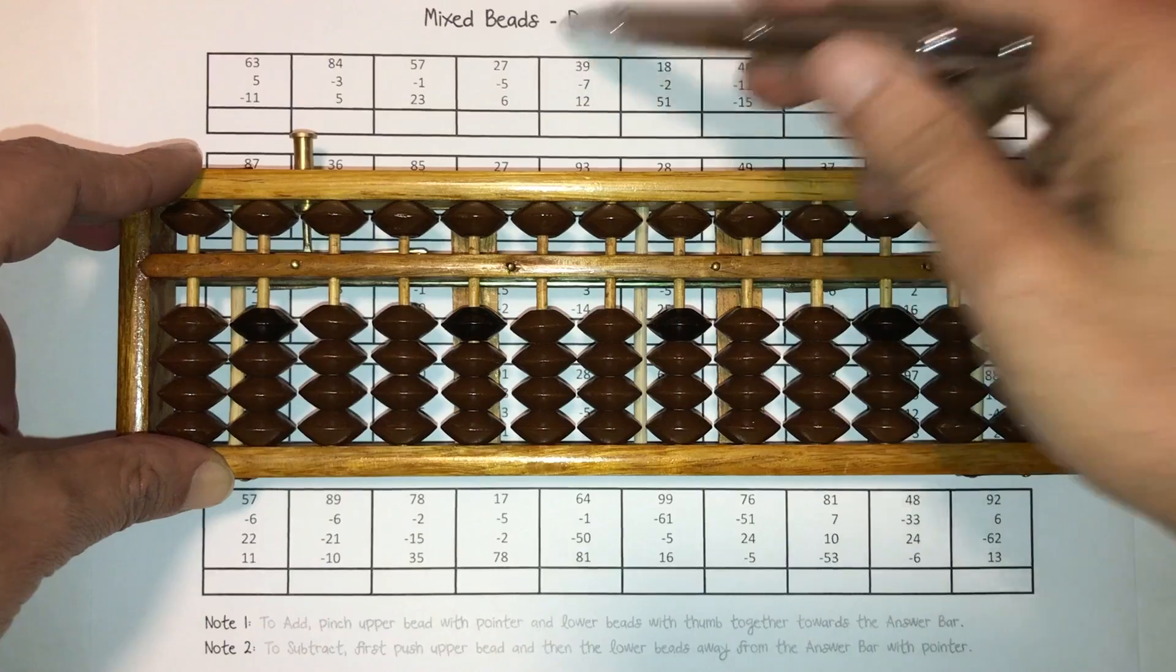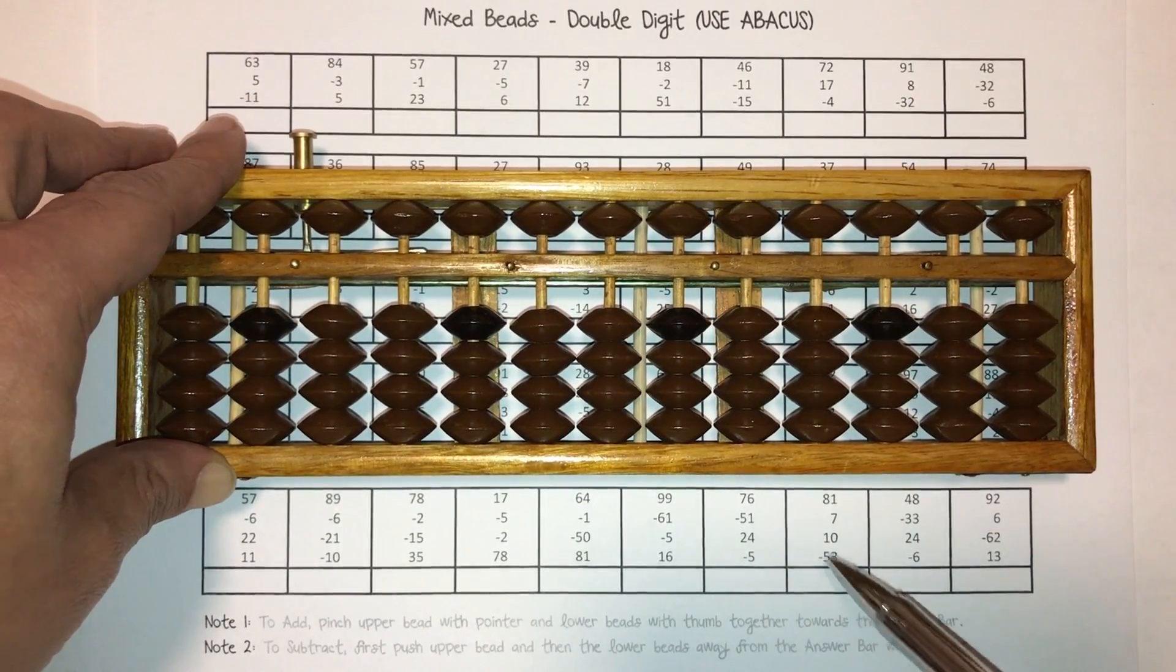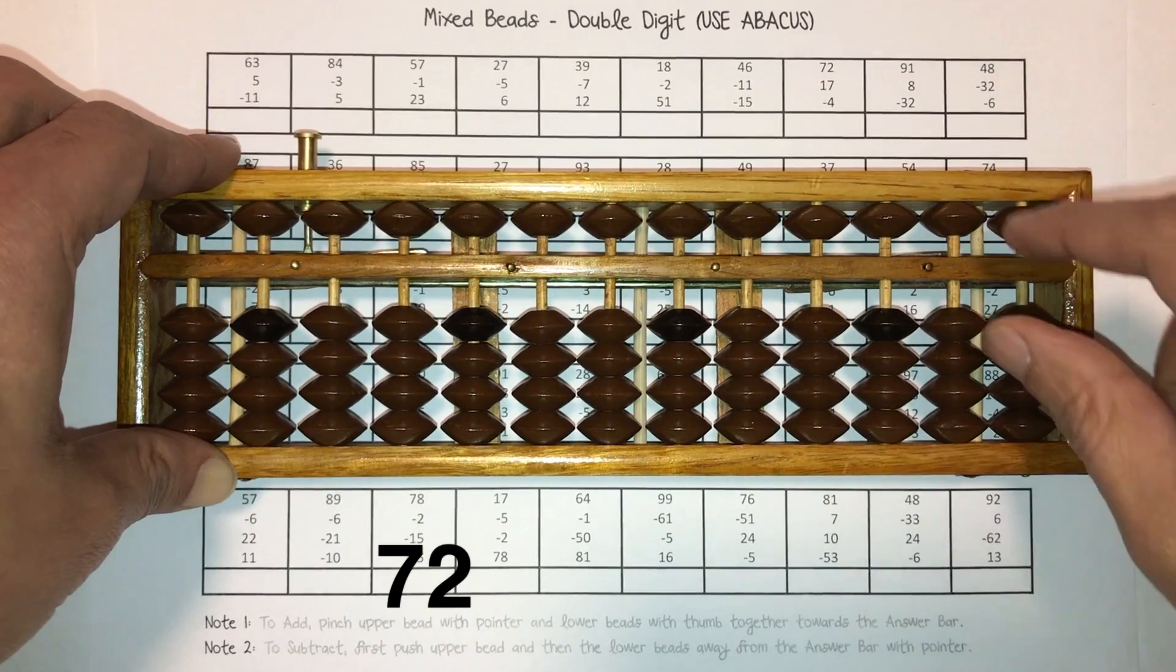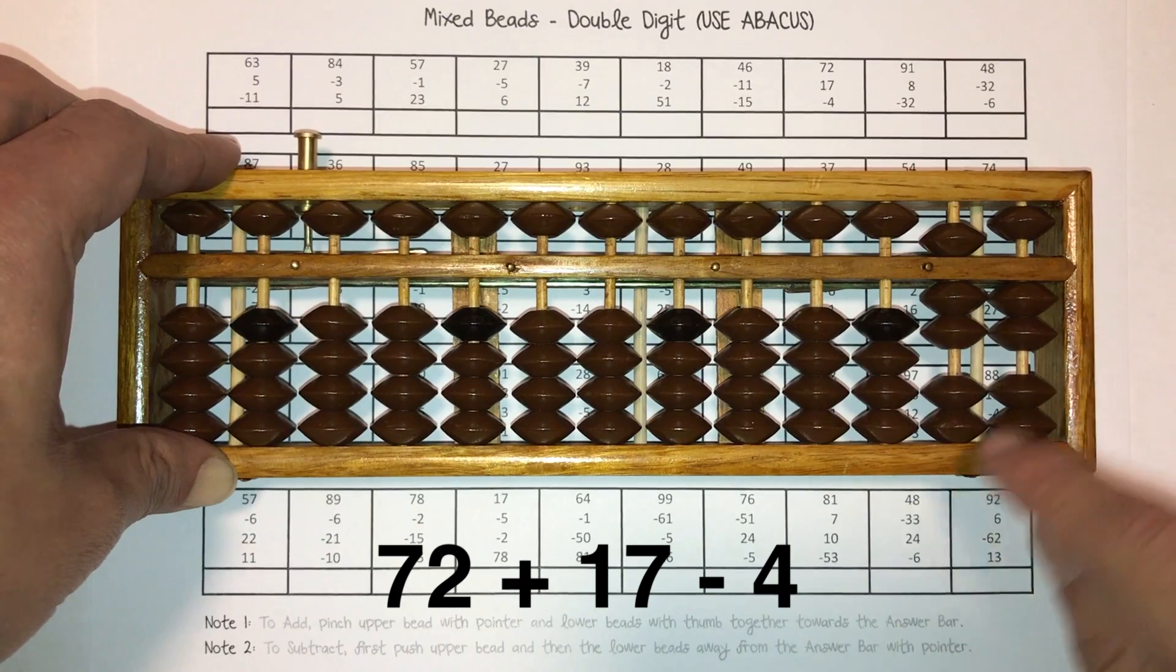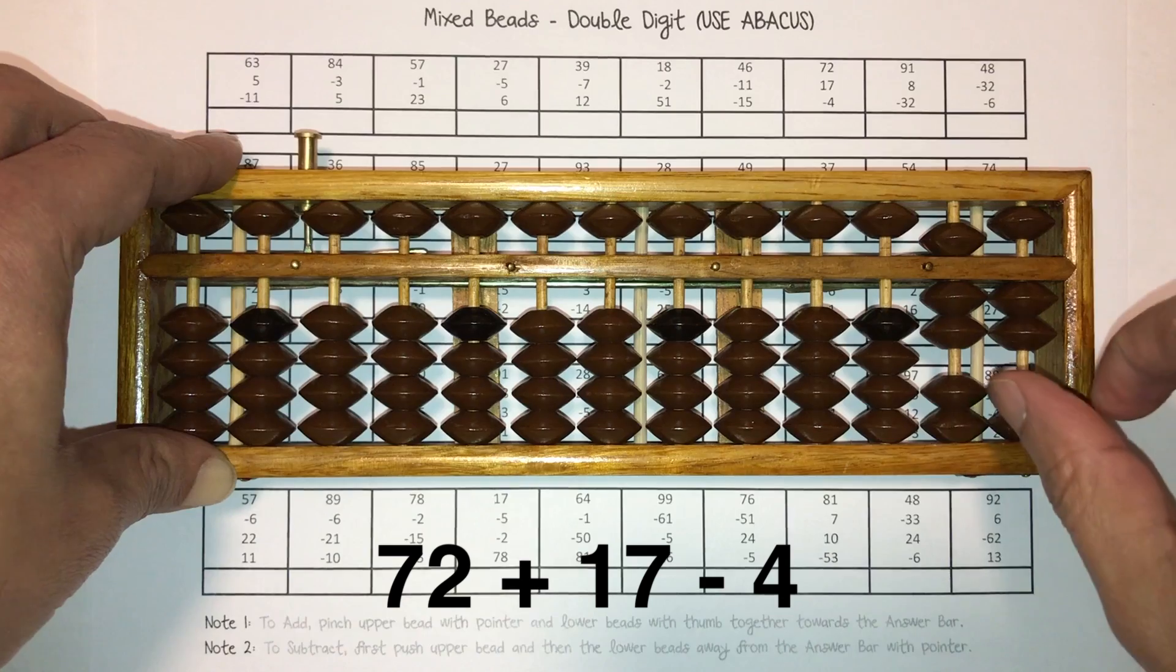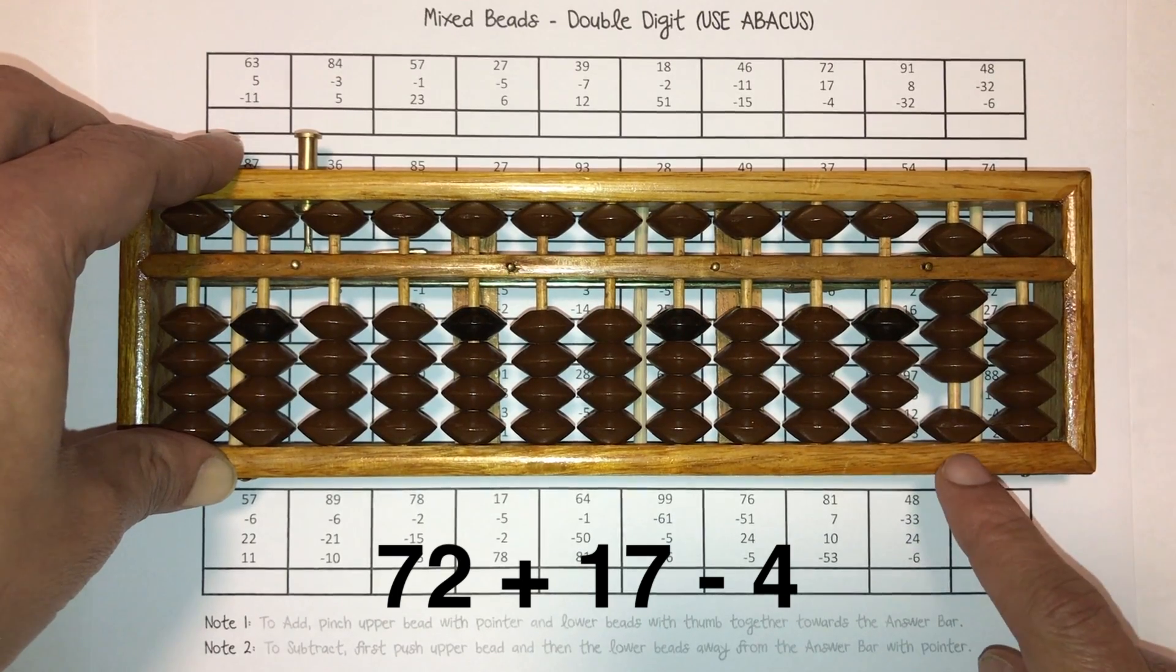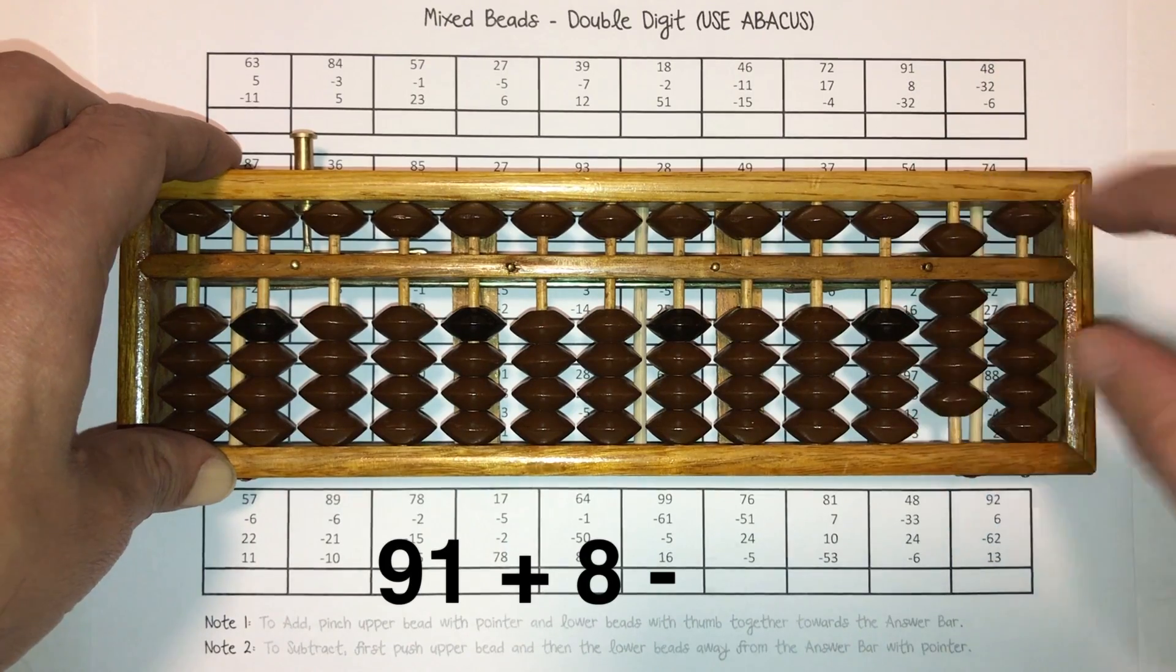We're going to work on the last three questions of the first row on this worksheet and the last three questions of the fifth row. Let's get started. 72. So seven, two, 72. You put the seven first, you start from the left. So 72 plus 17, pinch the seven together. Plus 17 minus four, answer is 85. 85 goes there.